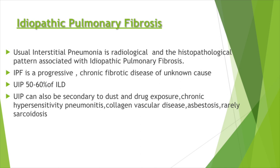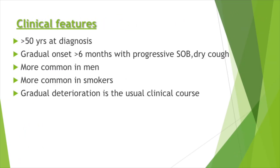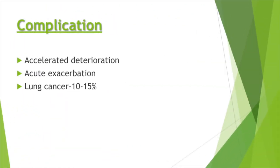UIP can also be secondary to dust and drug exposure, chronic hypersensitivity pneumonitis, collagen vascular disease, asbestosis, and rarely sarcoidosis. The disease presents at more than 50 years of age with gradual onset of symptoms, usually more than six months, with progressive shortness of breath and dry cough. It is more common in men and smokers, with gradual deterioration as the usual clinical course. Complications include accelerated deterioration, acute exacerbation, and lung cancer in 10 to 15 percent of cases.